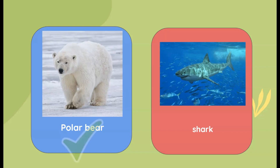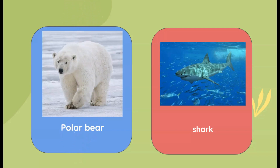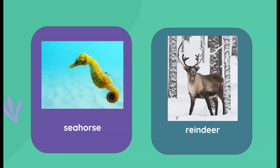It is the polar bear! The shark is a fish. Which one is the mammal here — is it the sea horse or the reindeer?